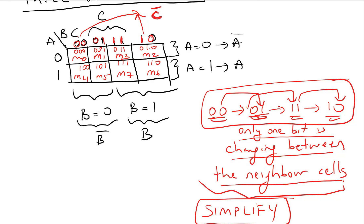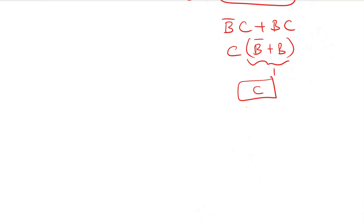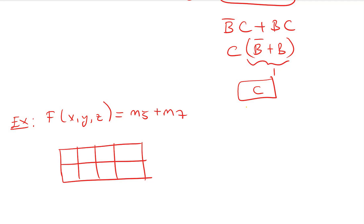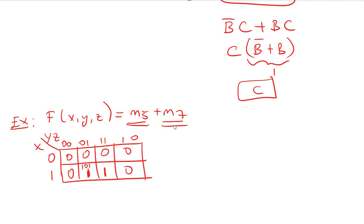Let's do an example with three variables. Given f(x,y,z) = m5 + m7, we draw the three-variable K-map with X on one axis and Y, Z on the other, using order 00, 01, 11, 10. We place a one in m5 (which is 101) and a one in m7 (which is 111). All other cells are zero.